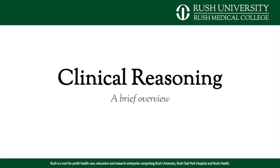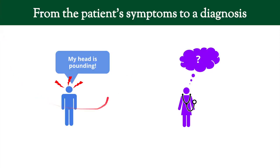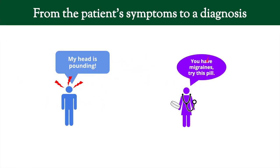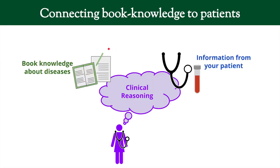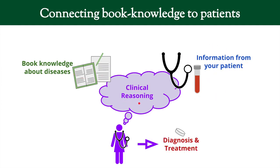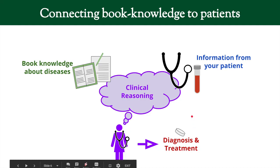We're going to be talking about a brief overview of clinical reasoning. We start with a patient and the symptoms that they come in with, and then we have to think about it and come up with a diagnosis and a treatment plan. This requires taking knowledge that you have about diseases — knowledge you'll get from your first two years of book learning — and also getting information from your patient. Two sources of information that you connect through your reasoning to come up with a diagnosis and treatment plan.